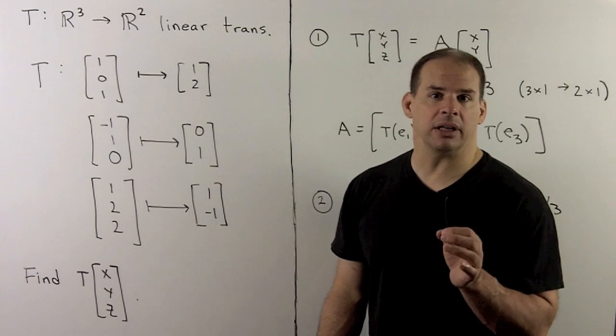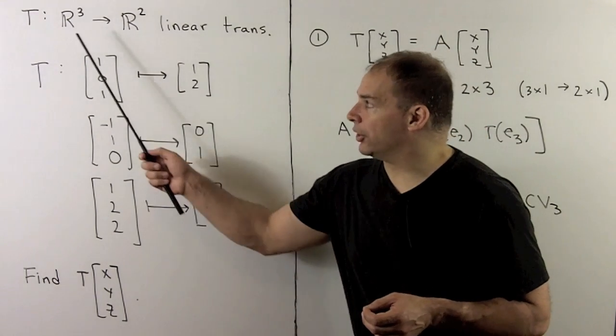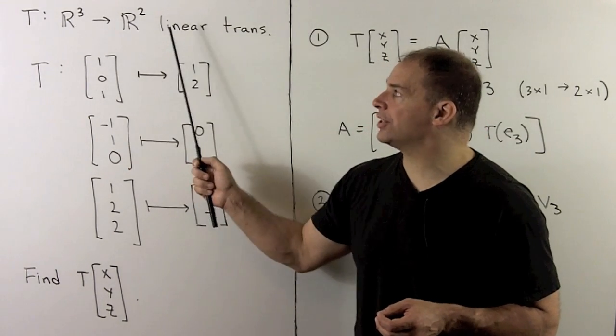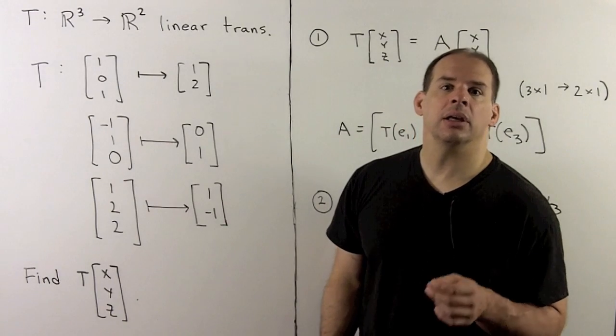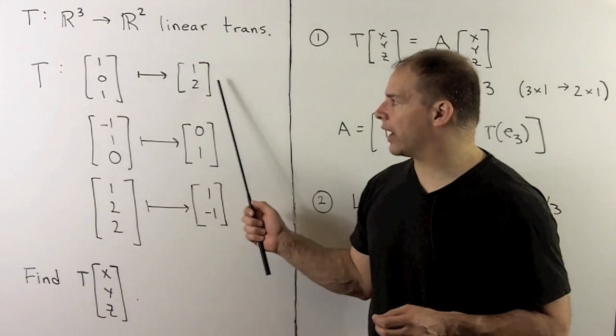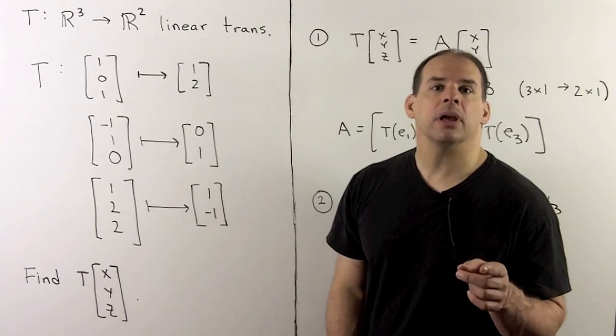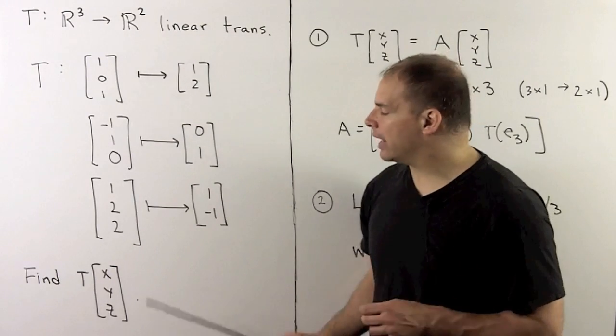Here's another example of evaluating a linear transformation on a basis. We have the linear transformation T, carrying R3 to R2. T is given by sending the following three vectors to the corresponding two vectors. Our problem: I want to be able to evaluate T on any three vector.